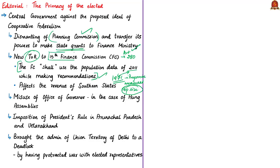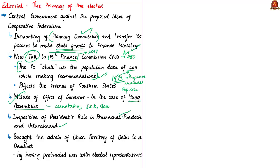The 15th Finance Commission was constituted in 2017 for making recommendations for a period of five years from 1st April 2020. The author also talks about the misuse of the Office of Governor in calling elected leaders to form governments in case of hung assemblies in states such as Karnataka, Jammu and Kashmir, Goa, and Tamil Nadu. The imposition of President's Rule in Arunachal Pradesh and Uttarakhand was described as the most blatant abuse of power — both decisions were called unconstitutional by the Supreme Court. The author notes that if the central ruling party had been in power in those states, President's Rule would not have been imposed.